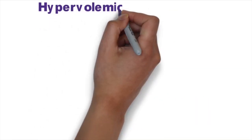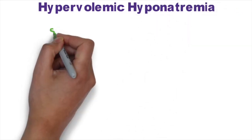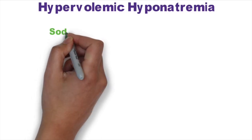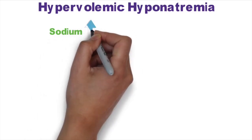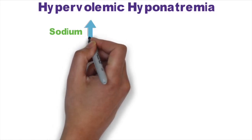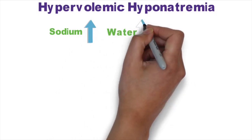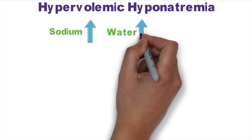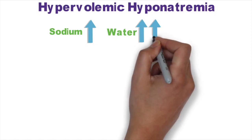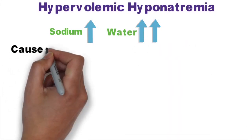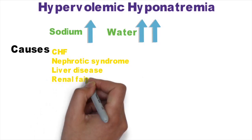Another type is hypervolemic hyponatremia. In hypervolemic hyponatremia, there is more water content in comparison to sodium — that is, water content is increased in blood, but sodium is also increased; however, water content increases more than sodium, resulting in hypervolemic hyponatremia.